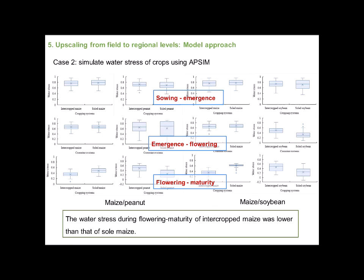In addition, ETSYM is also a useful tool for this. We simulated water stress in maize-legume intercropping across three crop growth stages, and found that water stress during flowering to maturity of intercropped maize was lower than that of sole maize, which might be a possible reason for reducing the climate risk of maize.